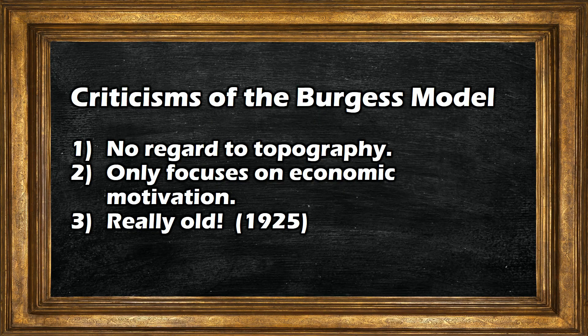Finally, one of the critical limitations of the model is that it is really, really old. In 1925, cars weren't nearly as prevalent as they are now. This model, therefore, doesn't take into account the impact that cars had on people getting from one place to another. This is probably the single biggest flaw in the model, at least if you're using it to explain the expansion of cities in 2017.